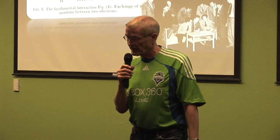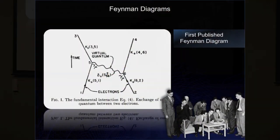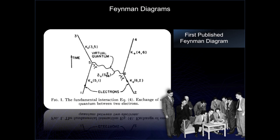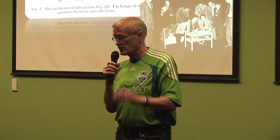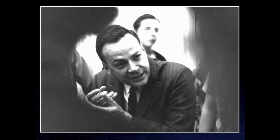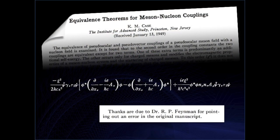At an American Physical Society meeting, a guy named Murray Slotnick gave a talk about how different electron-nucleon interactions differed. Oppenheimer got up from the audience and said, "Professor Slotnick, your calculations must be wrong because they violate Case's theorem." Slotnick had never heard of Case's theorem, so Oppenheimer kindly said, "You can remedy your ignorance tomorrow afternoon when Professor Case presents his theorem." So Feynman went home that night and did the calculations using his techniques. He sought out Slotnick the next day and said, "Can we compare? I did your calculations last night." Slotnick said, "It took me six months."